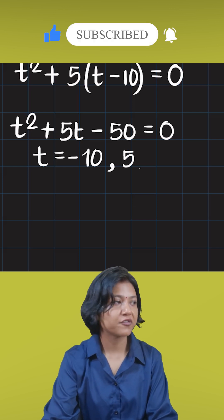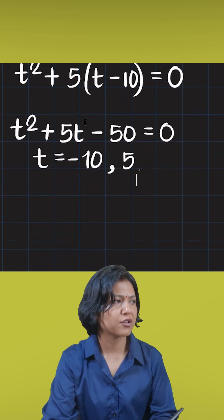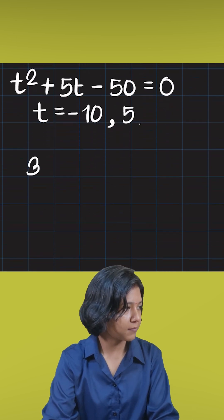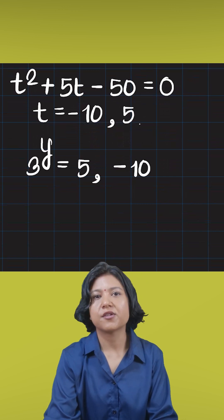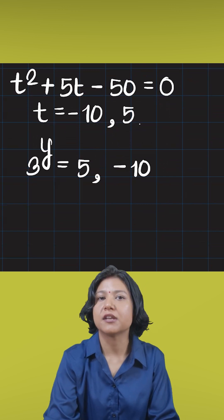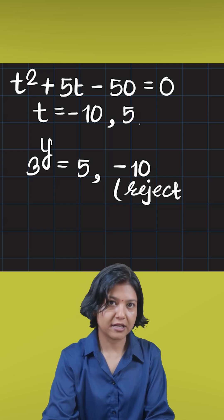Now once you have the value of t, that is when we are going to plug it back into the equation. I know t was 3 to the power of y, so I'll say 3^y has to be 5 or minus 10. Remember, a positive number raised to some power will never give you a negative answer, so you should reject the negative value.